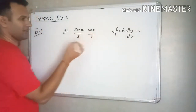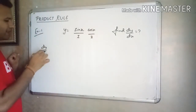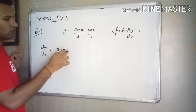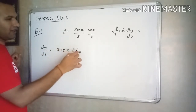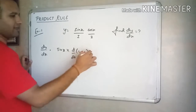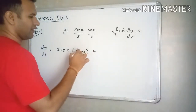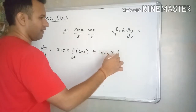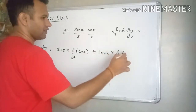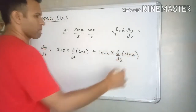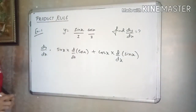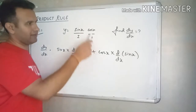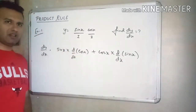Applying the product rule: first function into derivative of second function, plus second function into derivative of first function. That's all.